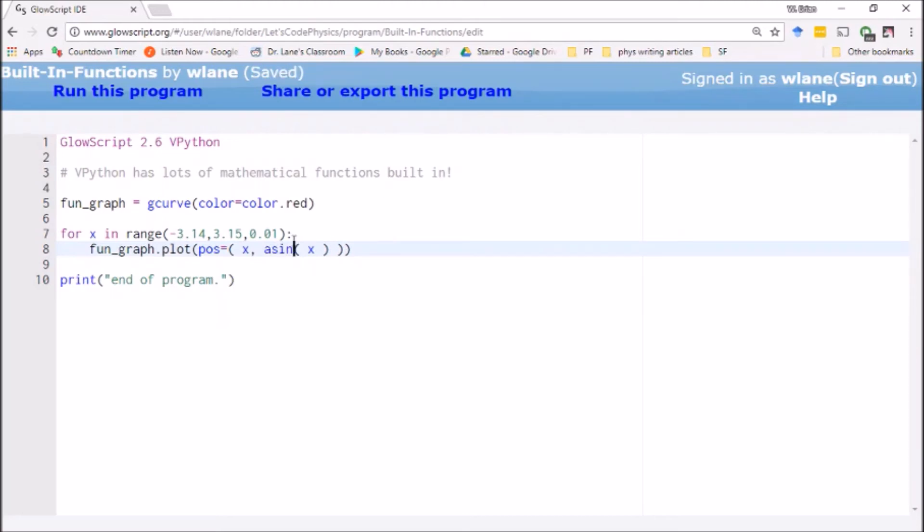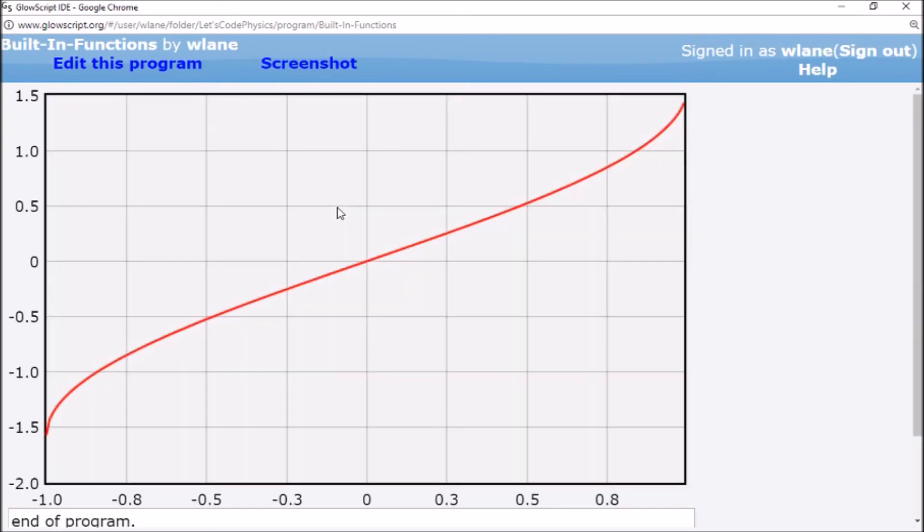Now, the arcsine and arccosine have this limitation that they can't go beyond negative 1 and positive 1. Because sine and cosine oscillate between negative 1 and positive 1. It only takes an input of that range. So, let's not bother with messing up the program by going outside that range. Let's hit control 2. Here you go. Here's your arcsine equation.